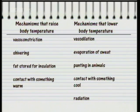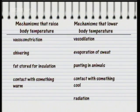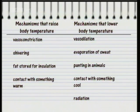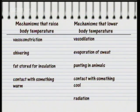Mechanisms that raise the body temperature include vasoconstriction, where the blood vessels near the skin surface narrow to reduce the flow and loss of heat from the blood. Shivering — that's rapid involuntary contraction of the muscles to produce heat. And fat stored for insulation. There's also heat gained by contact with something warm.